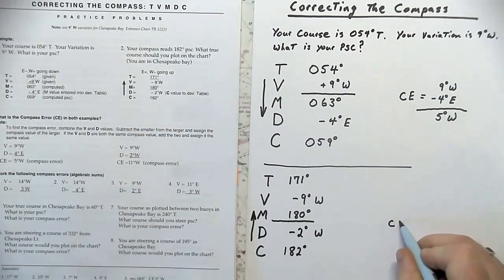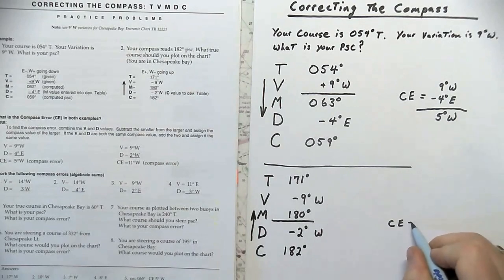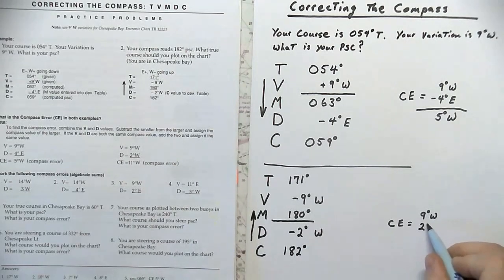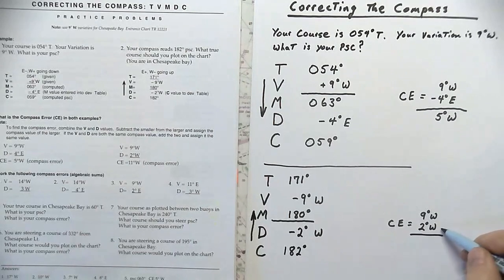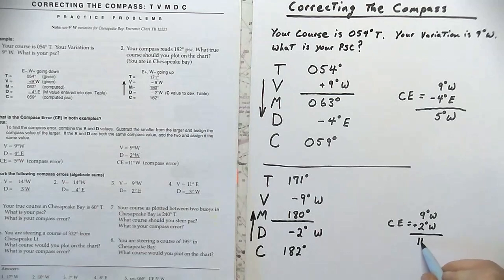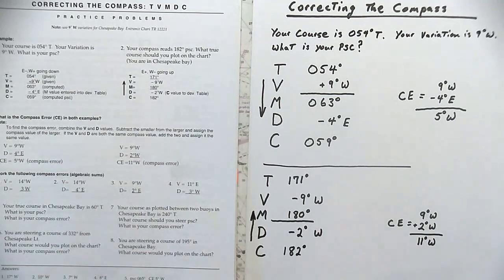In the second problem, our compass error, once again, is using 9 degrees west and 2 degrees west. Since the east and west values here are the same, we are going to add them together with a result of 11 degrees west.